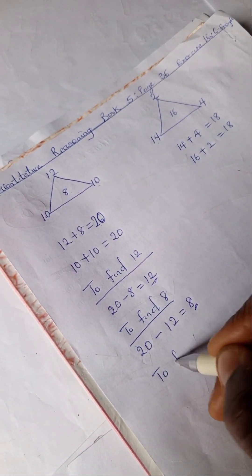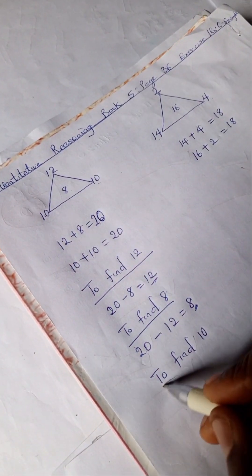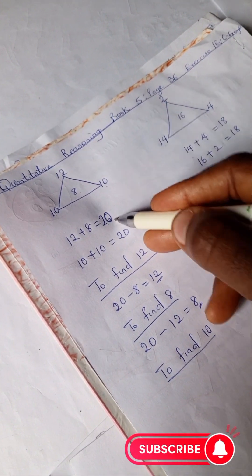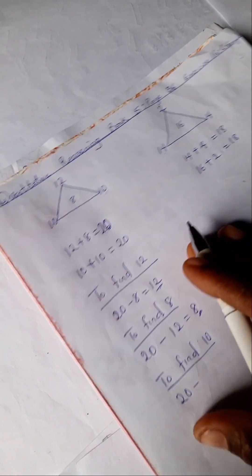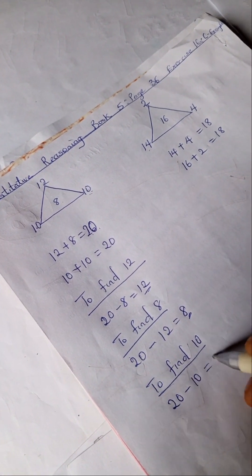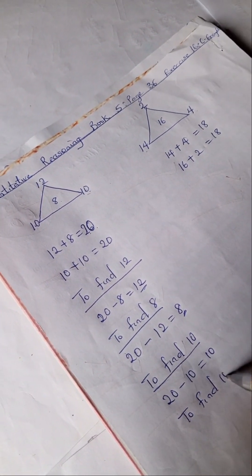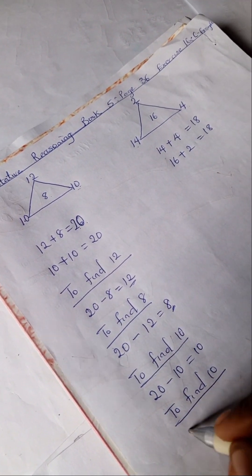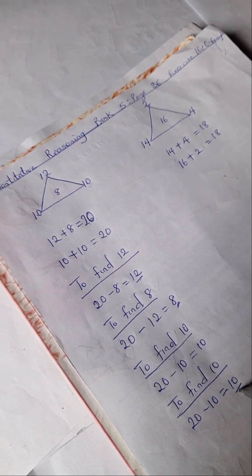And to find 10, as we were looking for this 10, we're going to pick 20 from here, 20 minus the 10 corresponding number to it is 10. So let's find 10 and the other 10, we have 20 minus 10 is also 10.